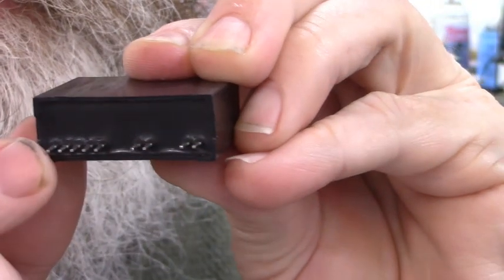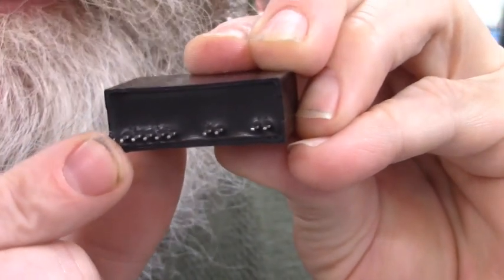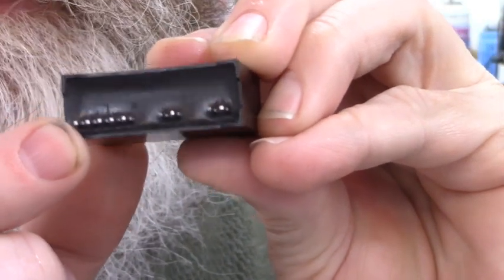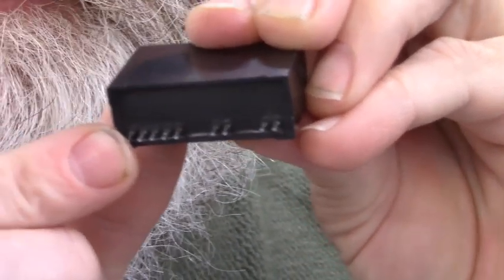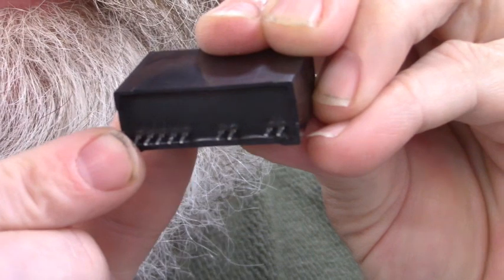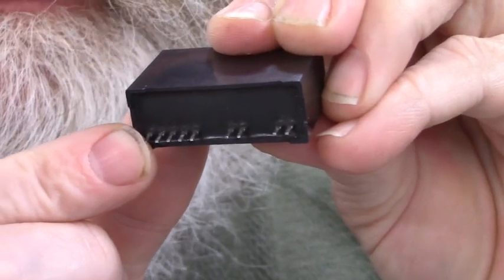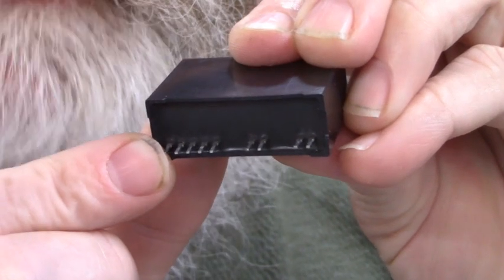Over here, I'm backwards. This is pin 1. This is the first output. Pin 2 is the second output. Pin 3, 4, and 5 are for the plus and minus 15 and ground to power up the unit.